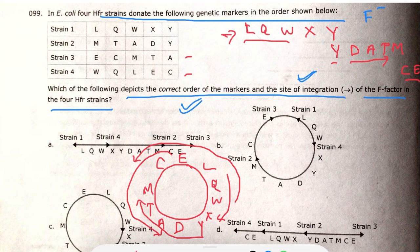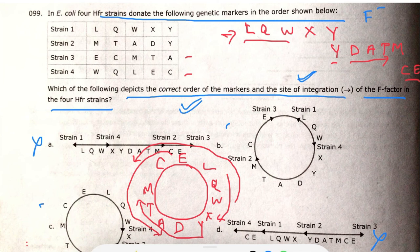Now we have found the gene order. Checking the answer options, the gene order matches both option B and option C, so we can eliminate options A and D. For the integration sites: the site is just before the first gene transferred, so for strain one it is at L, for strain two it is at M, for strain three it is at E, and for strain four it is at W.